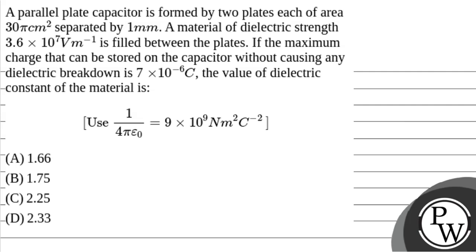Hello, let's read out the question. A parallel plate capacitor is formed by two plates, each of area 35 cm square, separated by 1 mm. A material of dielectric strength 3.6 x 10 to the power 7 V per meter is filled between the plates, with the maximum charge that can be stored on the capacitor without causing any dielectric breakdown being 7 x 10 to the power minus 6 C. The value of dielectric constant of the material is to be found. Given: 1 by 4π epsilon-naught equals 9 x 10 to the power 9 newton meter square per coulomb square.